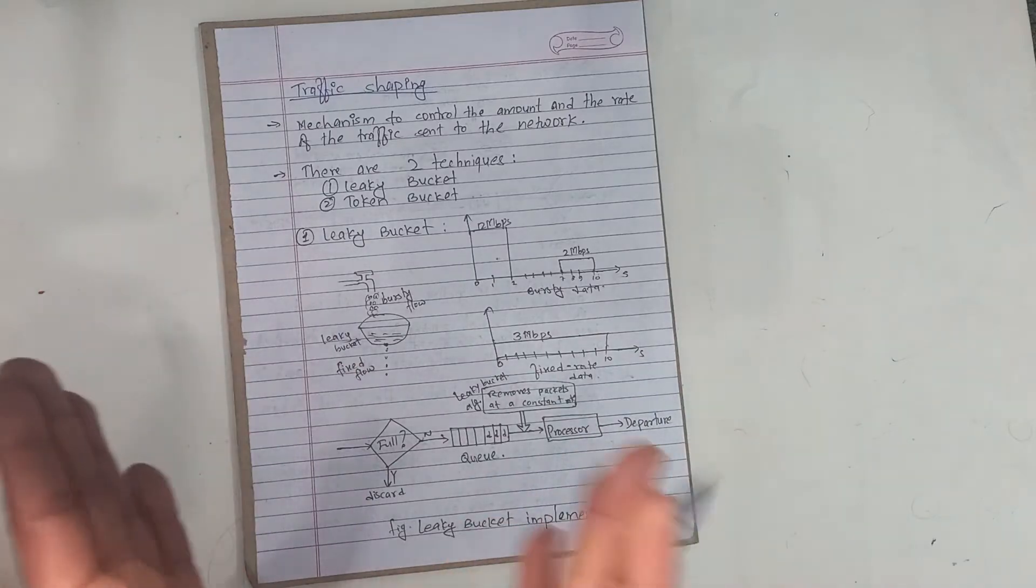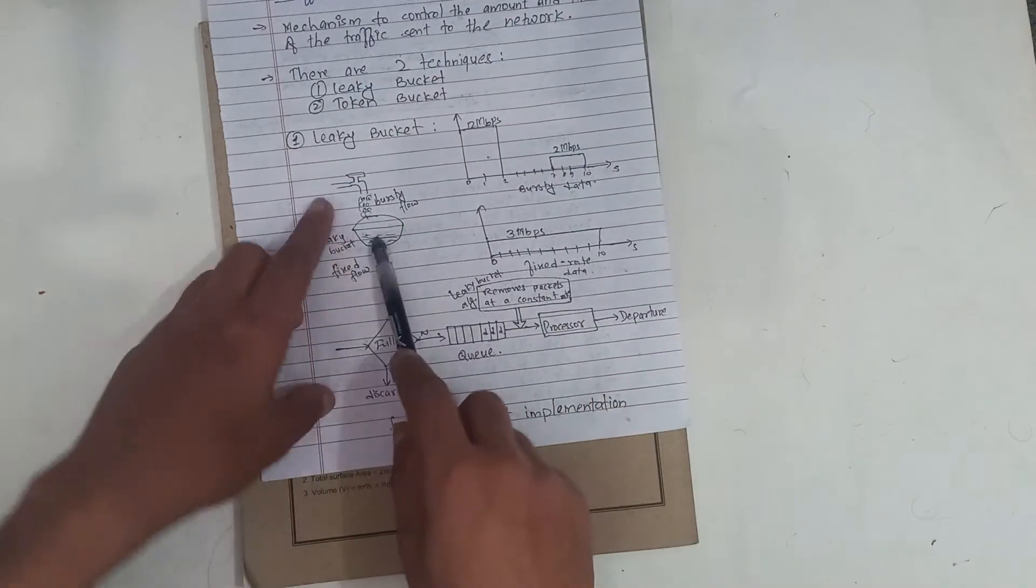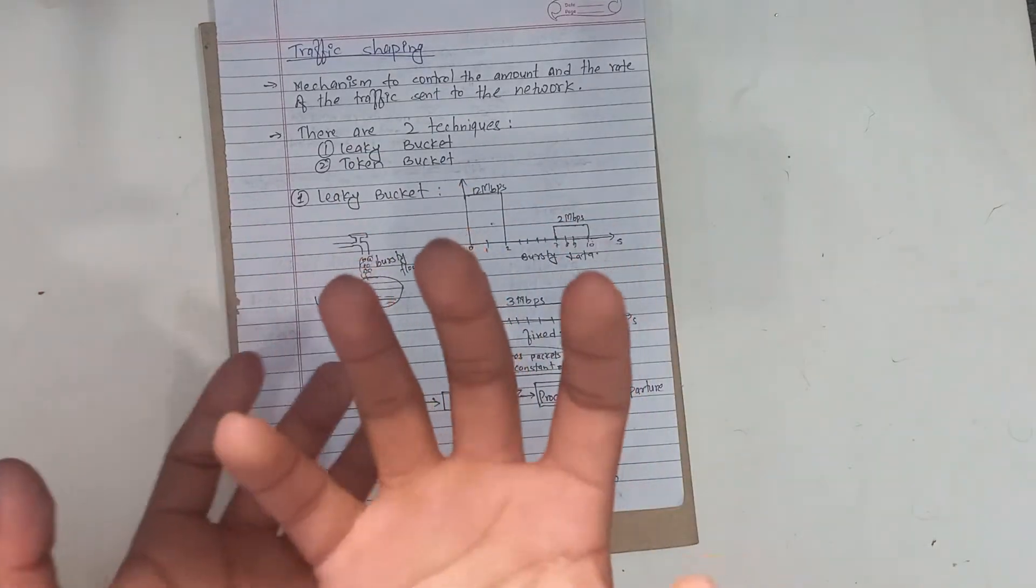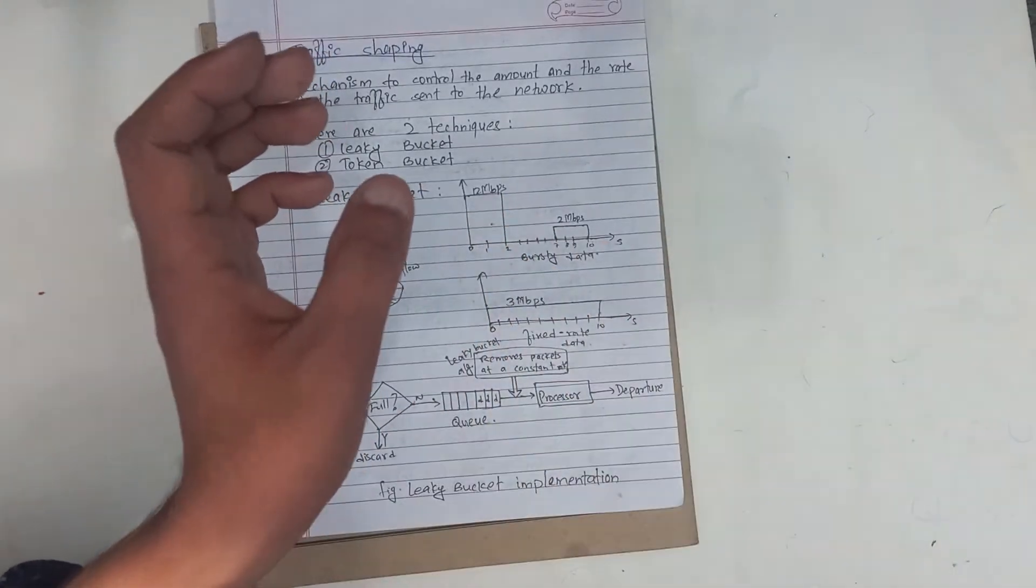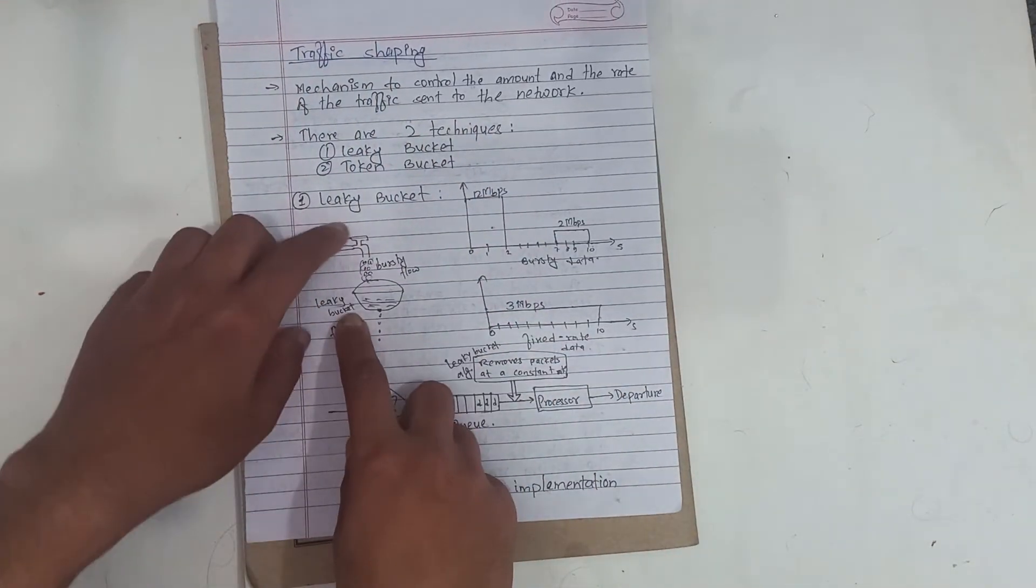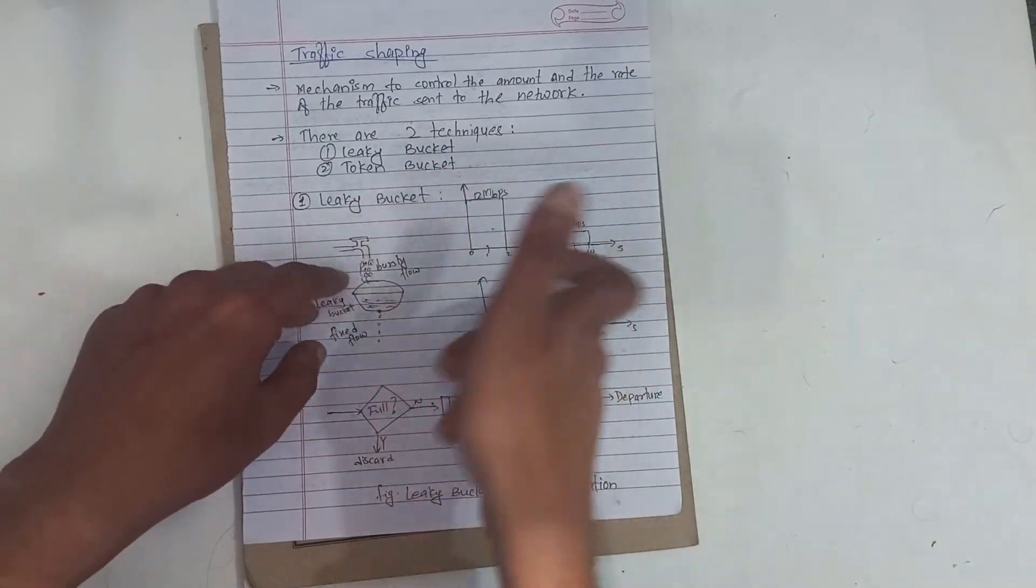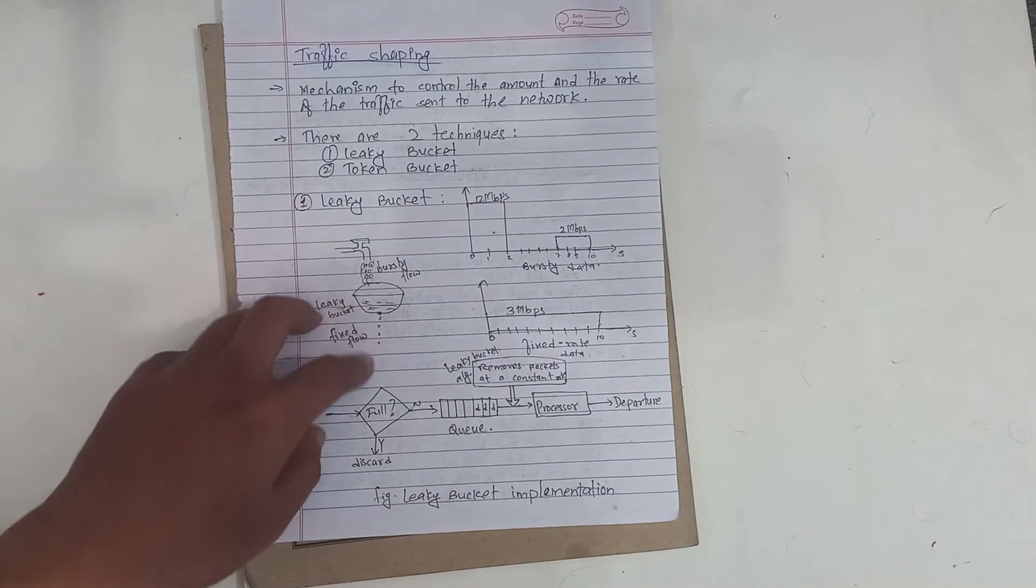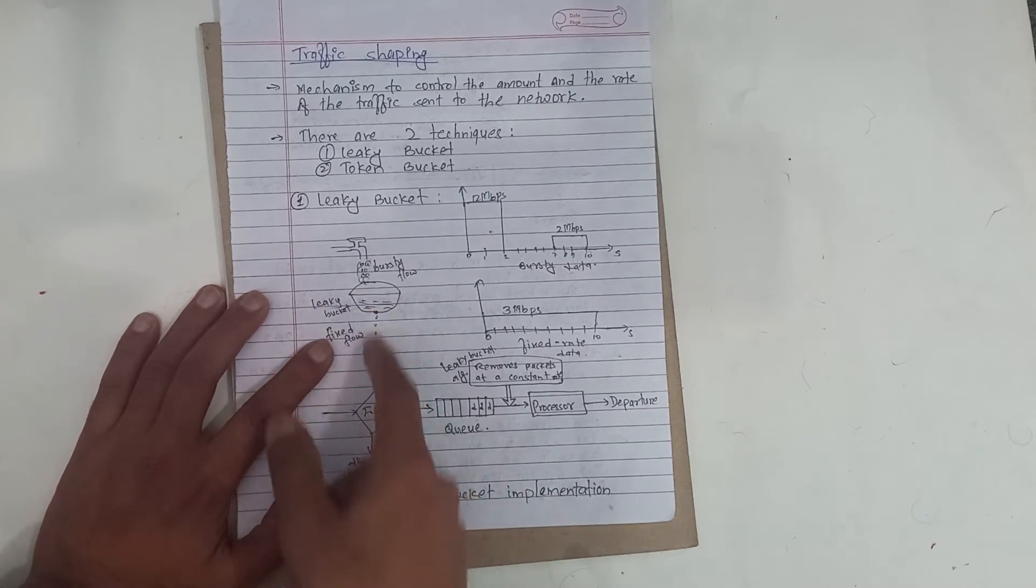The two techniques are leaky bucket and token bucket. Let me talk about how much traffic can be managed. This diagram reminds me of the leaky bucket. There is a bucket and the water flows through it. The leak is fixed flow.